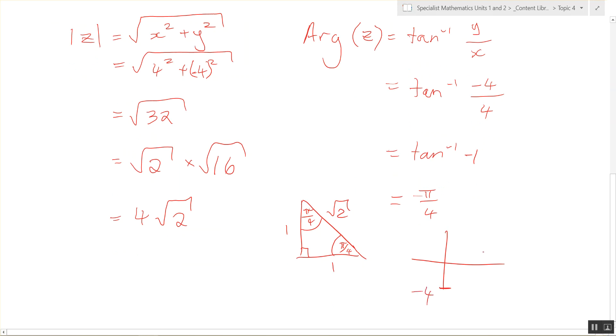It's down, negative 4. And the real is across 4. So if it wanted you to sketch it, you'd do it like this. Pi over 4.